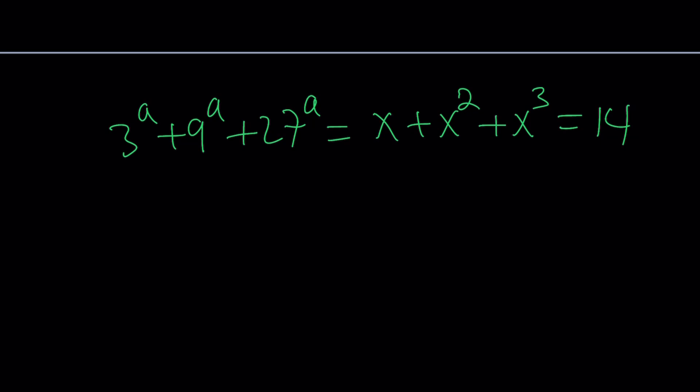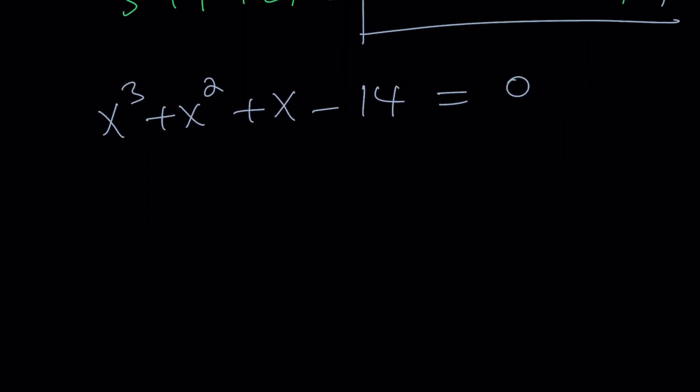Okay, so now we've got ourselves a polynomial equation, which is fairly easy to solve, especially this one. Obviously, to solve this equation, let's write it in a more standard form like this. Now, we can go ahead and subtract 14 from both sides and set it equal to 0.